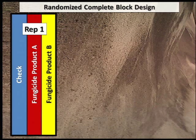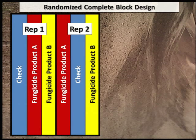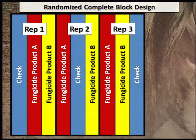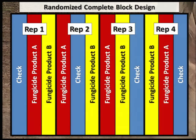Your treatment comparisons would be: Untreated Check, Fungicide Product A, and Fungicide Product B. To study three or more treatments, as in this example, you could use a randomized complete block design.